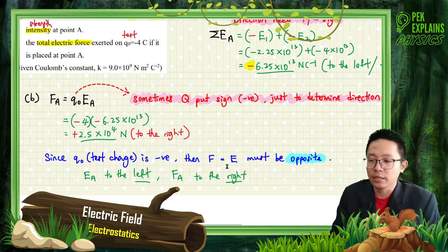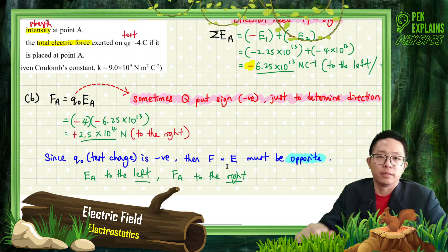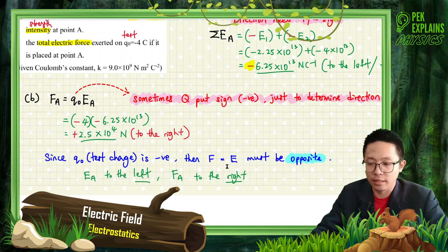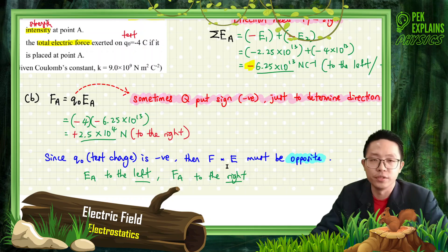In conclusion, EA direction is to the left, and force FA direction is to the right — opposite directions, because we have a negative test charge. That's all for this question. See you in the next video. Thank you.